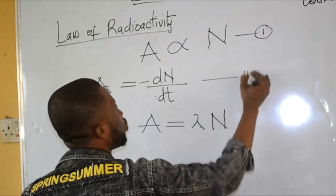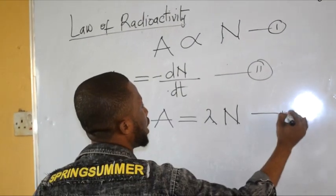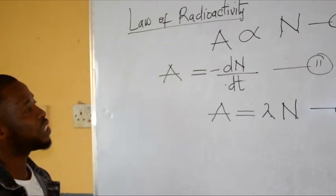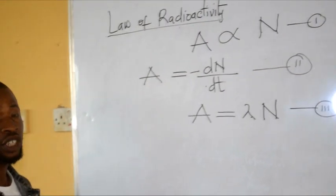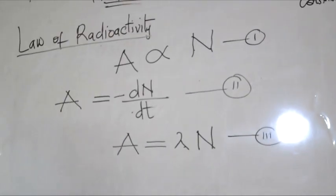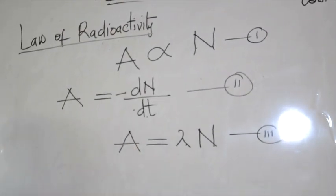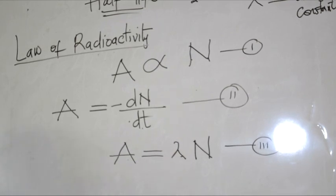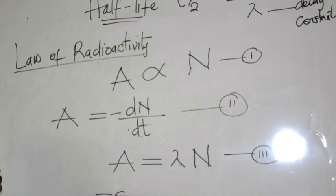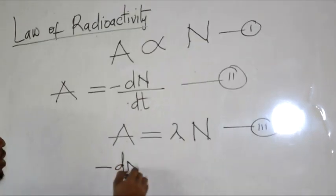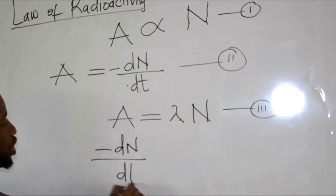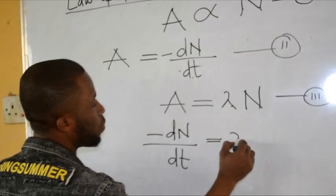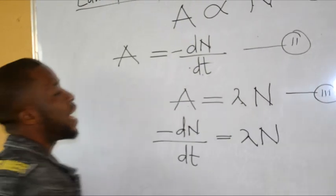Let me call this equation one, this equation two, and this equation three. If A is given as negative change of N over change in t, therefore I can replace the value of A using equation two. Therefore, I have that negative dN over dt will be equal to lambda N.